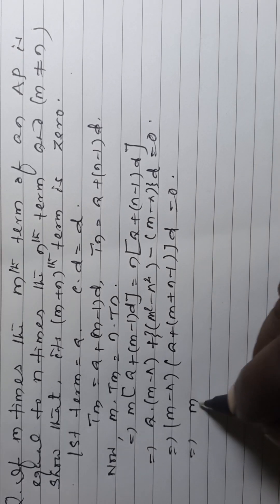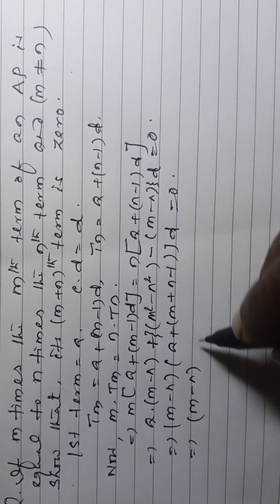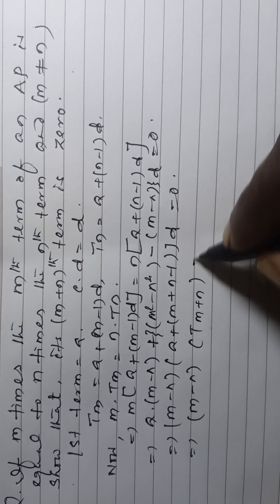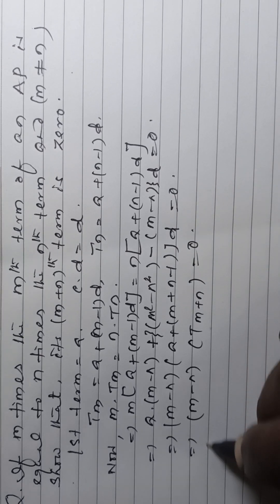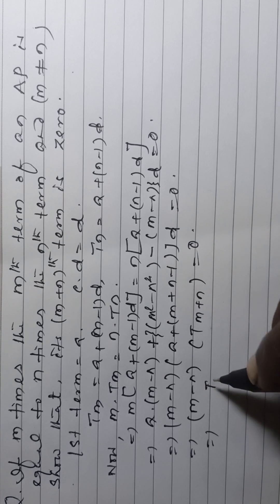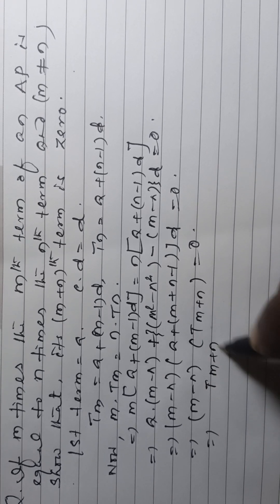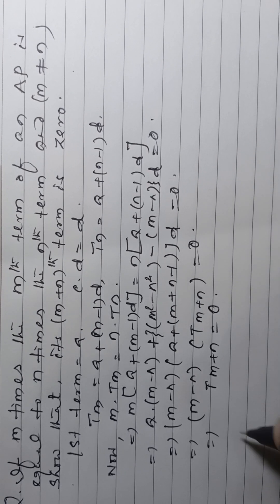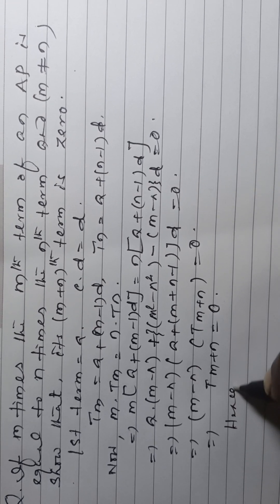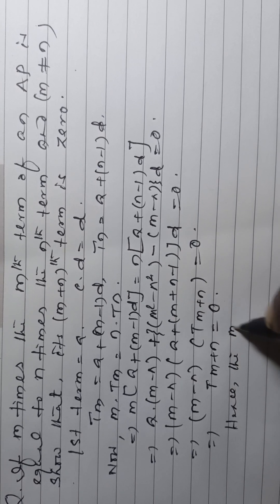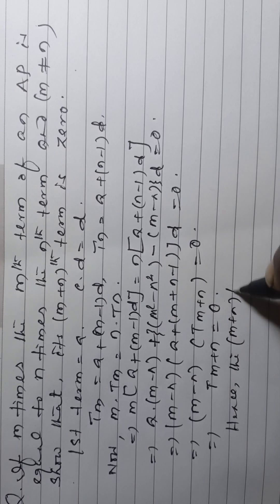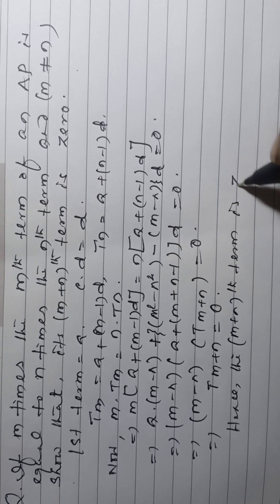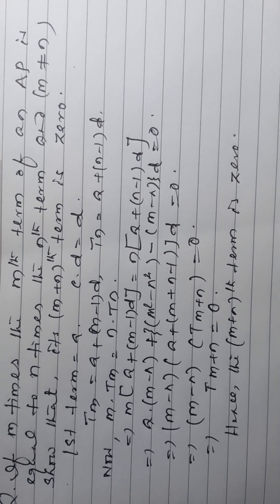Therefore, (m minus n) into the (m+n)th term is equal to 0. Since m is not equal to n, the (m+n)th term is equal to 0. Hence proved.